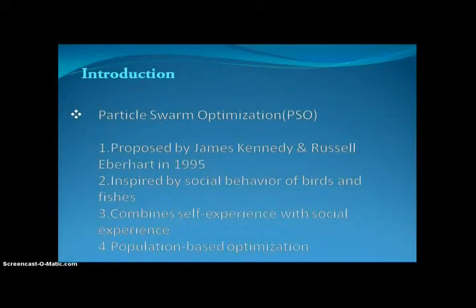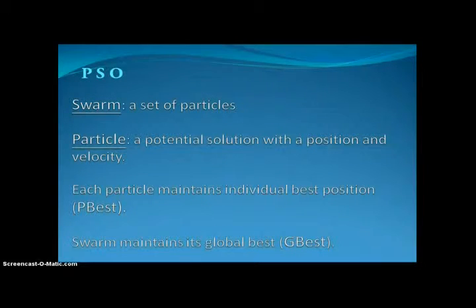If we want to know what a particle is, what a swarm is, we will know here. Swarm is a set of particles, whereas a particle is a potential solution with a position and velocity. Each particle maintains its individual best position, P-best, and swarm maintains its G-best, Global-best.